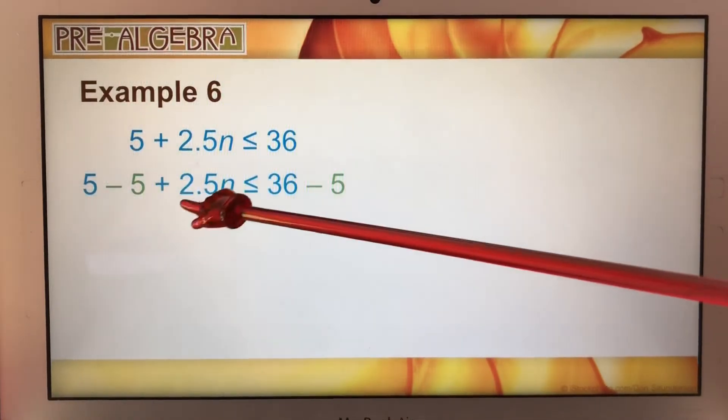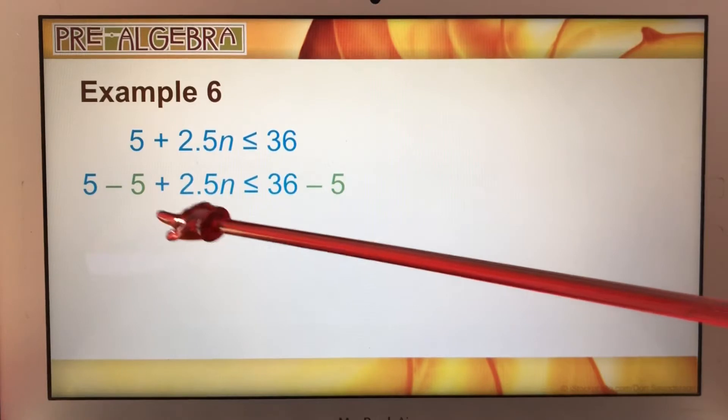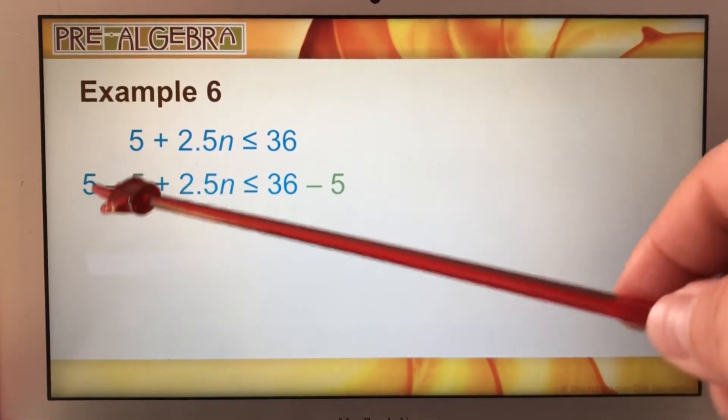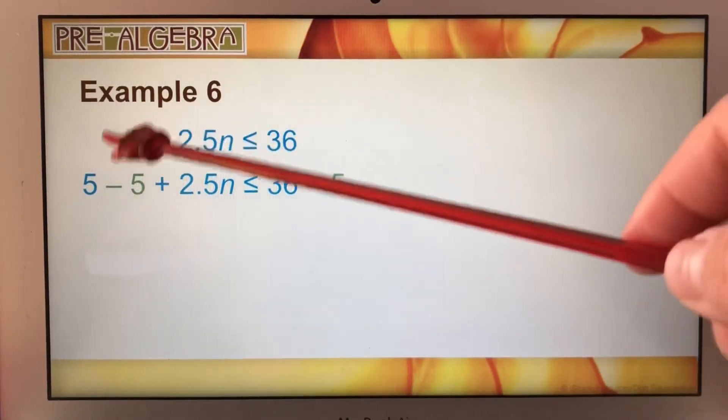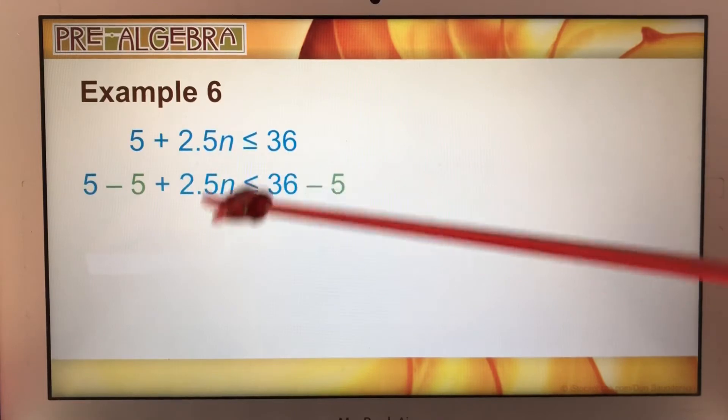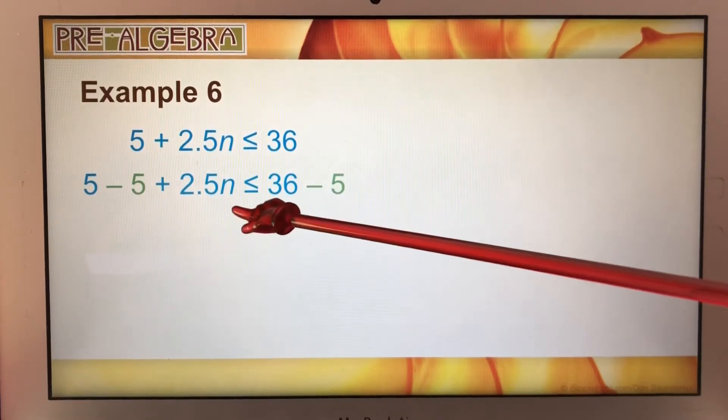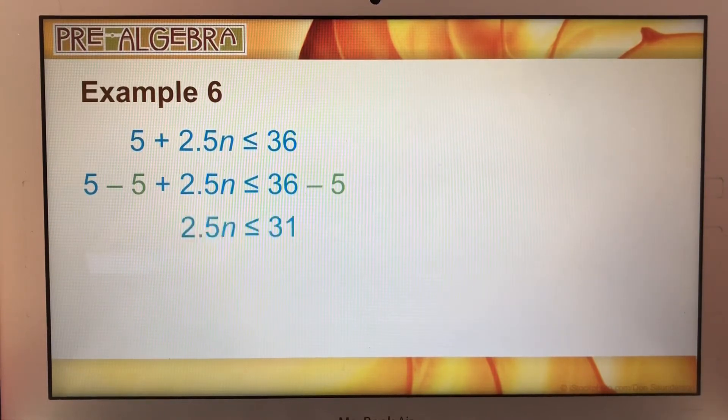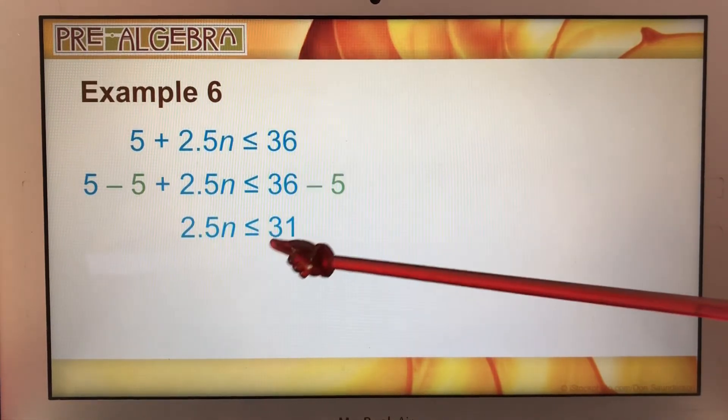So now we can solve for n, just like you would with any of the other equations. You're going to subtract 5 from both sides so that we can move this over and then have this variable by itself. 2.5n now is less than or equal to 36 minus 5. And we get 31.